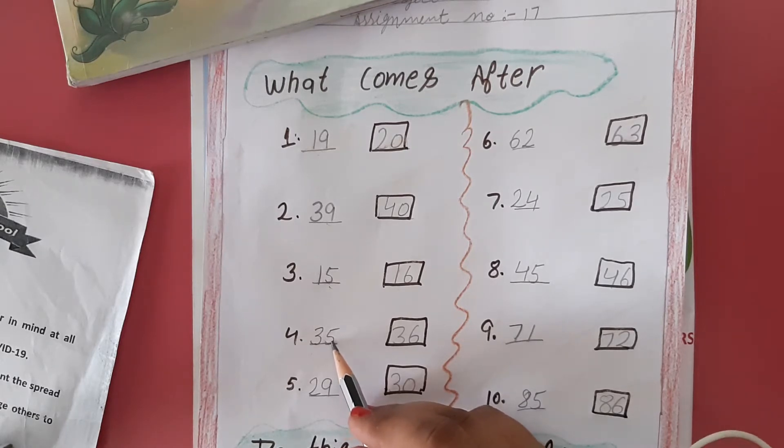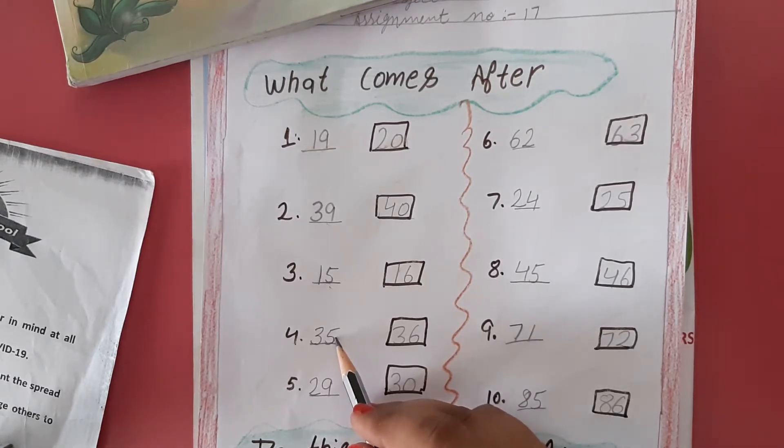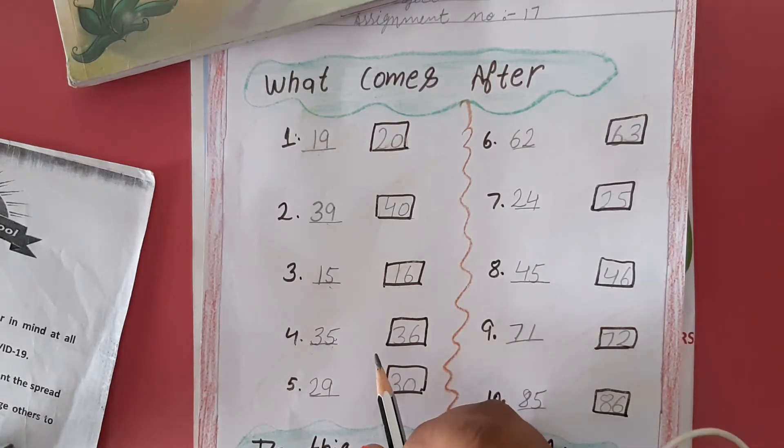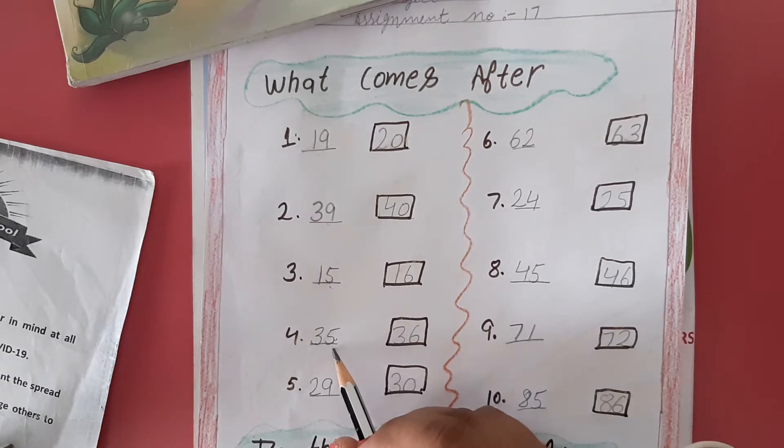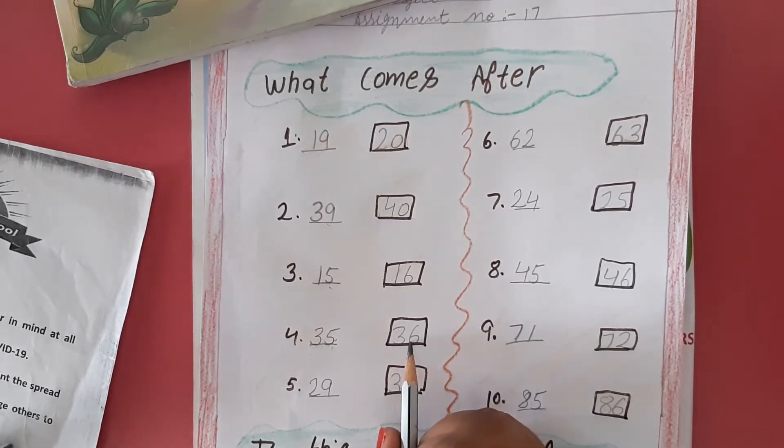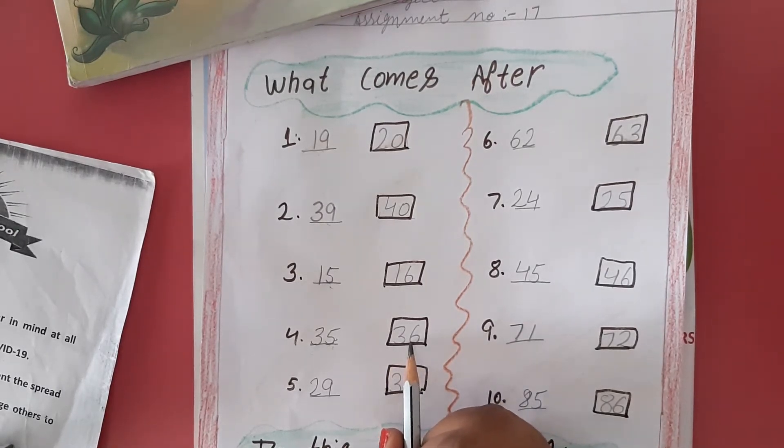Next, 22 is at the top. What comes after 22? 23. Then 32 is given, what comes after? 33.